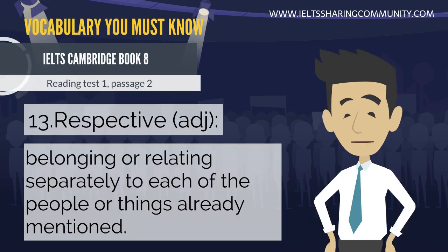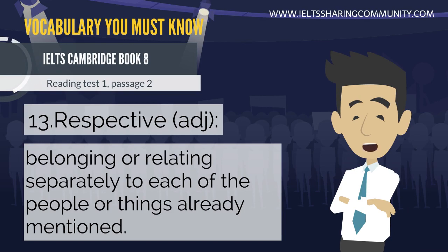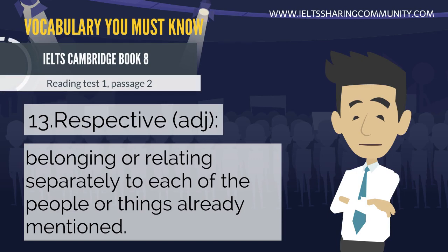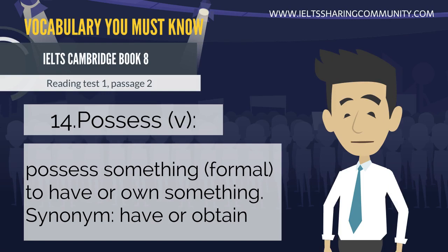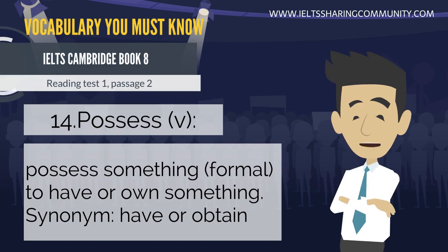13. Respective — belonging or relating separately to each of the people or things already mentioned. 14. Possess (v) — to have or own something. Synonyms: have, obtain.